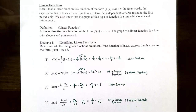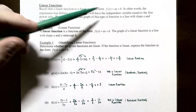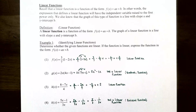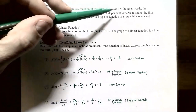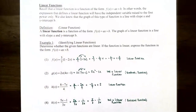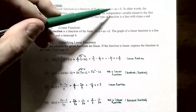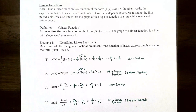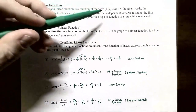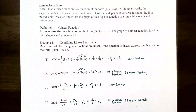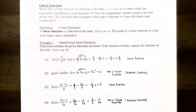Recall that a linear function is a function of the form f(x) = mx + b, or ax + b. It's a function where the independent variable is raised to the first power. The coefficient a is the number in front of x, and b is a constant term. The graph of a linear function will be a line, where the slope is the number a and the y-intercept is the number b.